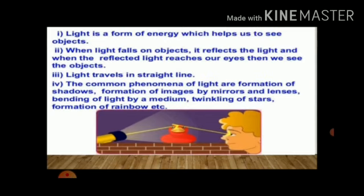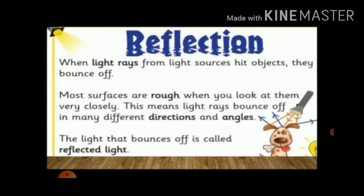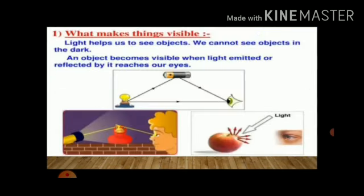In this section on reflection, when light rays from light sources hit objects, they bounce off. If it is an opaque object, then it reflects the light. Most surfaces are rough when you look at them, and these rough surfaces reflect light in different directions, spreading it.